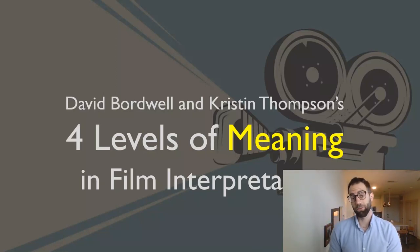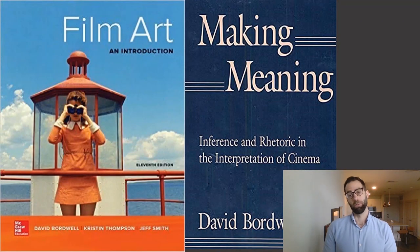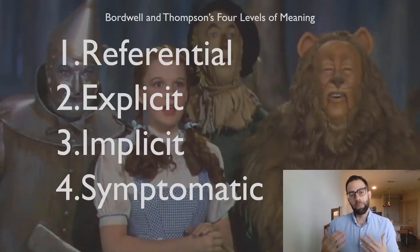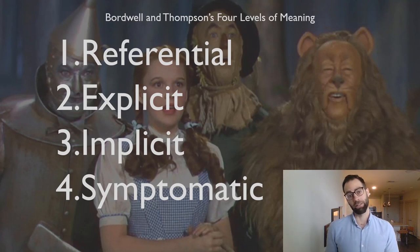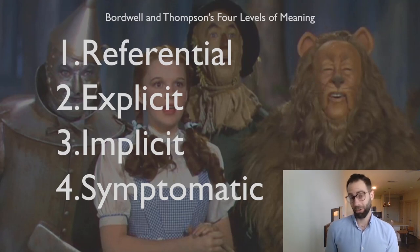Welcome to our video on the four levels of meaning in film interpretation as discussed by David Bordwell and Kristen Thompson, mostly in their textbook Film Art. The four levels of meaning also comes from an earlier book by Bordwell called Making Meaning. This framework is trying to provide a guide for understanding what it is we do when we say that artworks mean things. The discussion revolves around film but could be applied to other kinds of artworks, and it is only one account of how meaning can be categorized in the history of aesthetics and the philosophy of art.